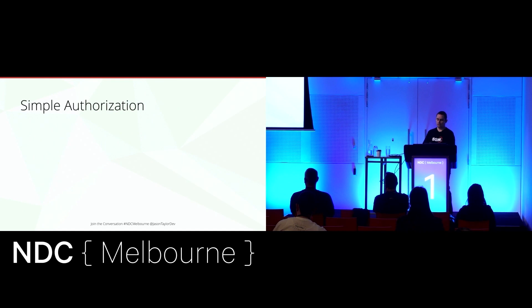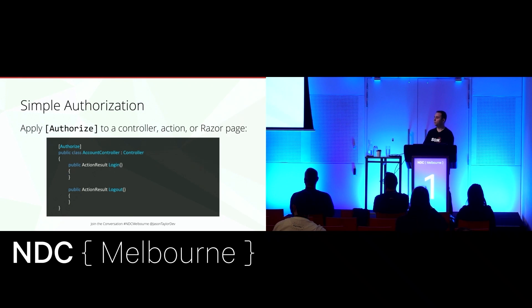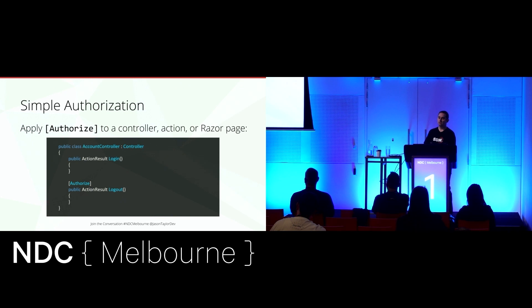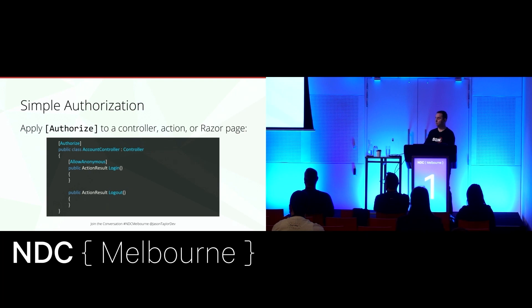Let's take a look at some examples. With simple authorization, we can use the authorize attribute on a controller, action, or Razor page. The authorize attribute applied to the account controller means users can only access login and logout if they are authenticated — which is a problem because they can't log in unless they're authorized. We can fix that by moving the authorize attribute down to logout, or by applying allow anonymous to the login action, so all actions within the controller require an authenticated user except for login.